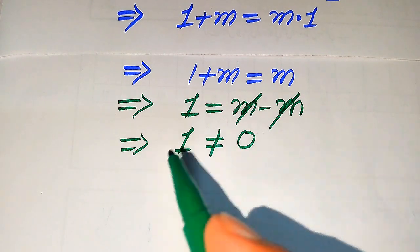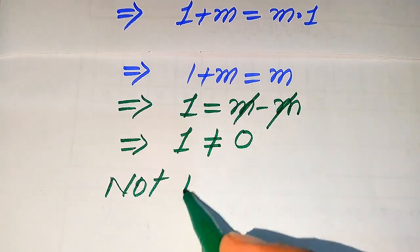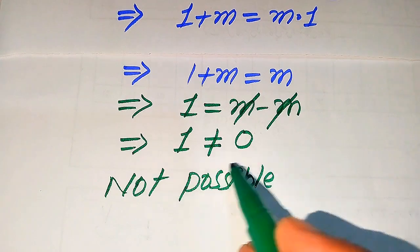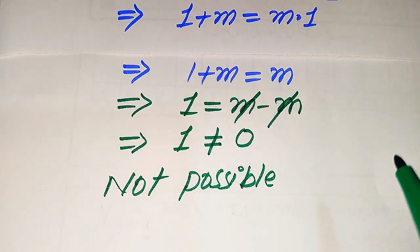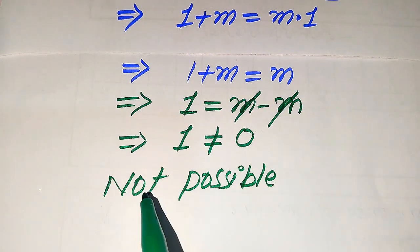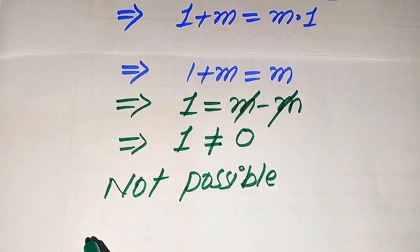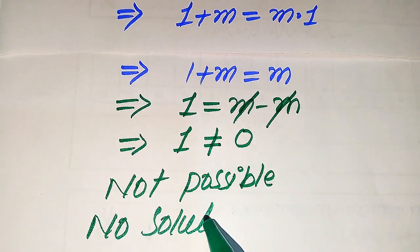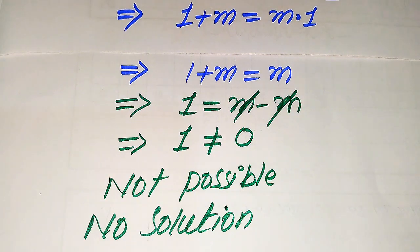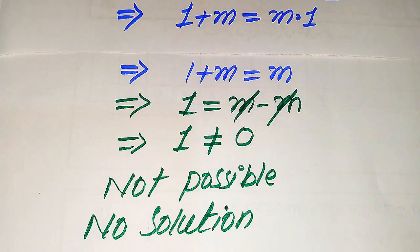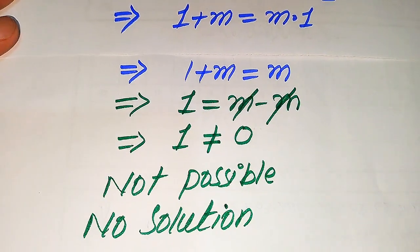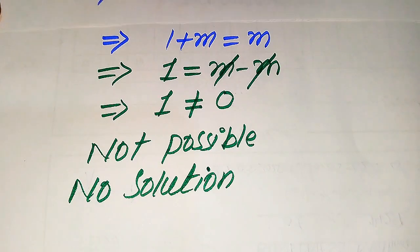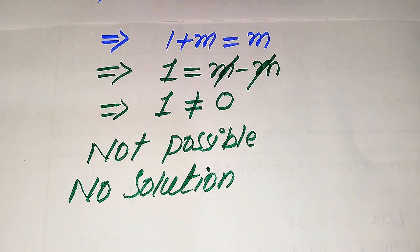Since 1 is not equal to 0, we cannot get any value of m that satisfies the given equation. From both methods we conclude that this question has no solution. Please try this question in your own way and let us know in the comments if you find any value of m. Thank you for watching — please subscribe to my channel for more videos.